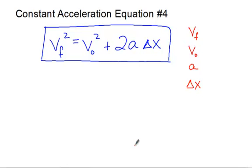So we've looked at four different equations, and in each one, one of the five quantities has been left out. I've also tried to do a good job of listing out the variables, which is something we're going to look at on the next slide — our problem-solving technique called the GUESS method.